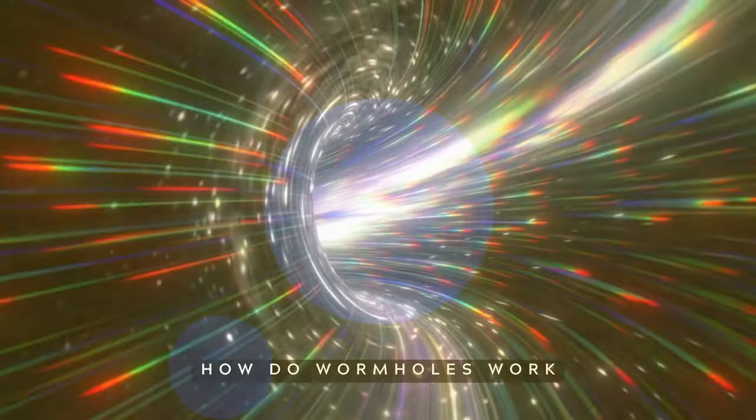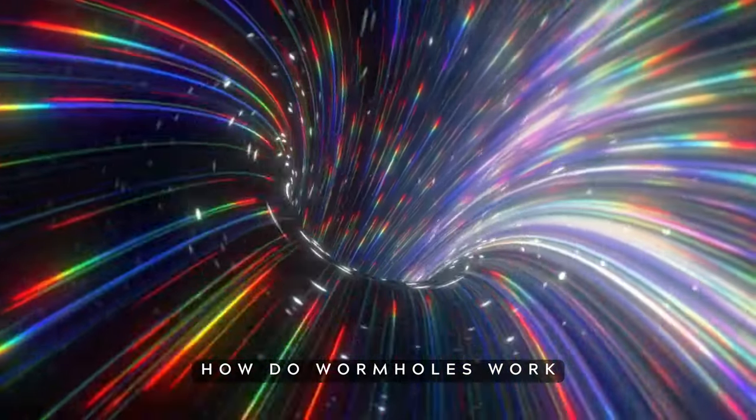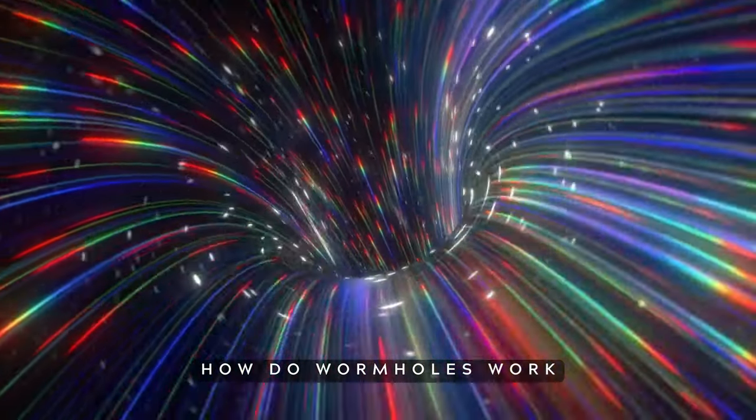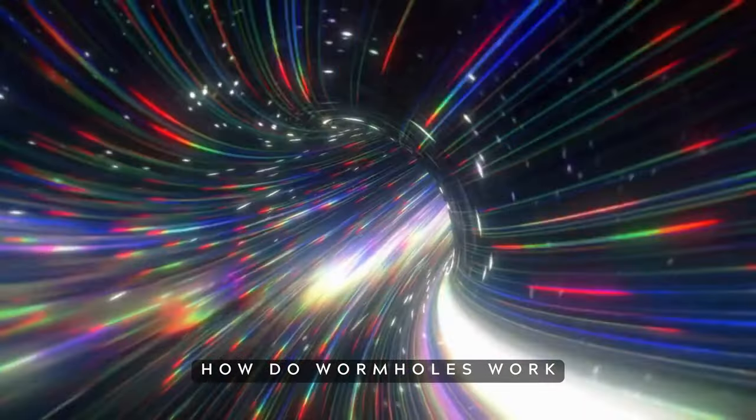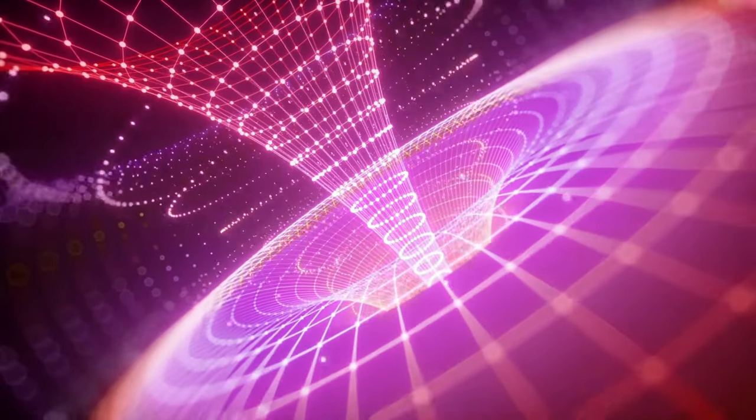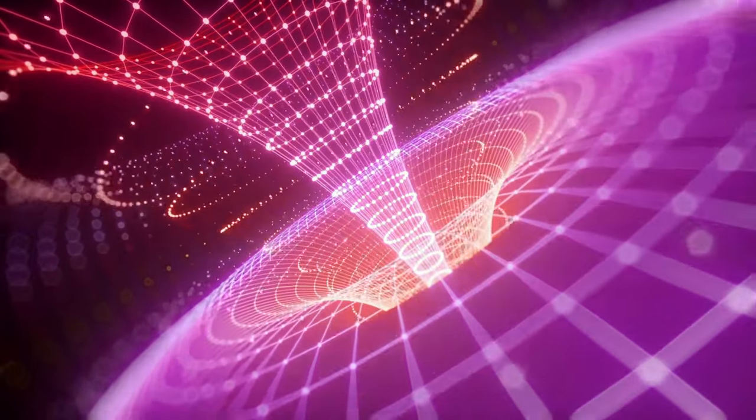Three: How do wormholes work? Wormholes work by warping the fabric of space-time, creating a shortcut between two points in space. In analogy, consider an ant walking across a flat sheet of paper from point A to point B.